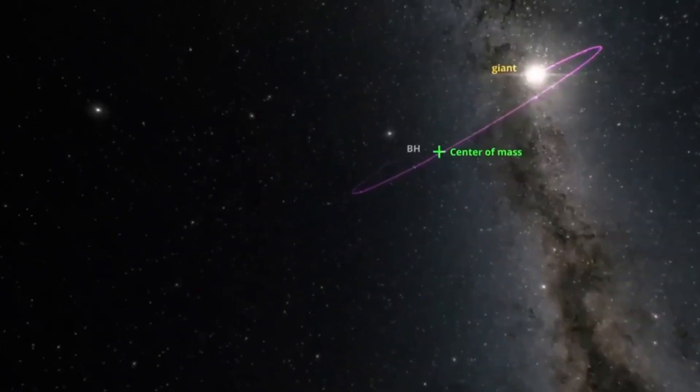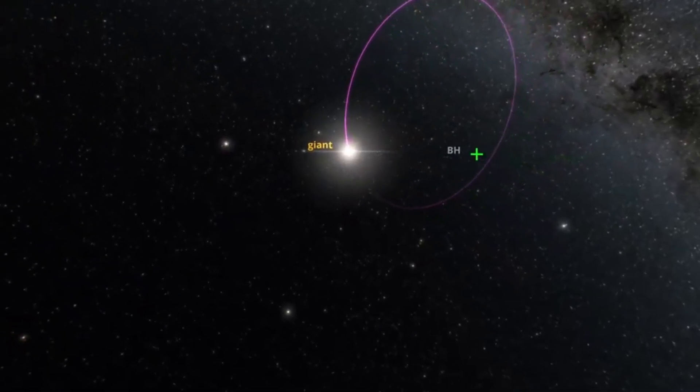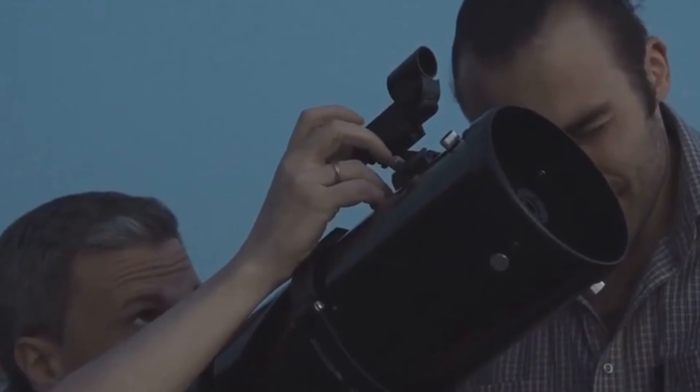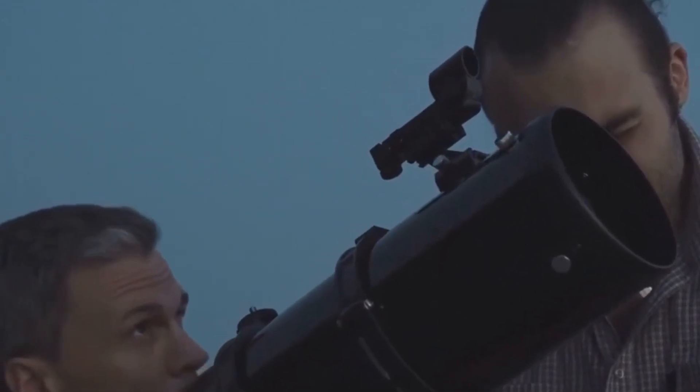The companion star of Gaia BH3 is primarily made of hydrogen and helium, which are the universe's lightest elements. The star lacks heavier elements. Astronomers refer to these heavier elements as metals, despite their non-metallic nature. They can be a bit confusing, though.